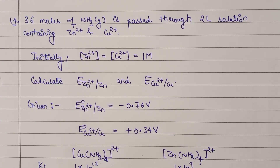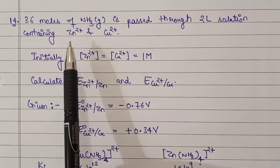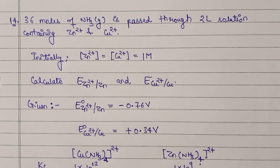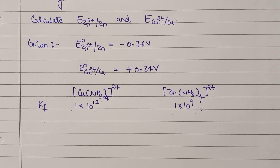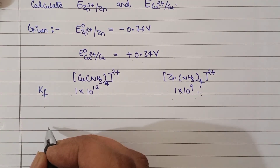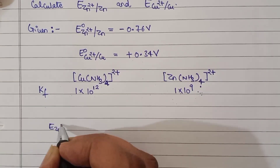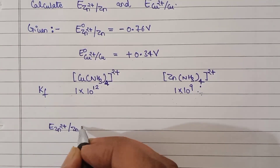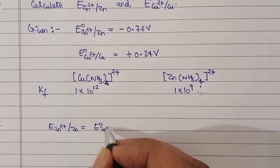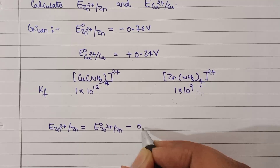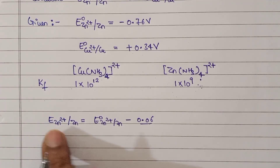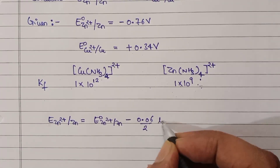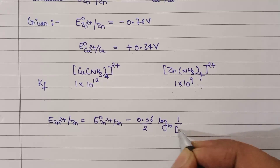When we add ammonia to this solution, it will form complexes with both Zn²⁺ and Cu²⁺, and the formation constants are given. Looking at the Nernst equation for Zinc: the reduction potential of Zinc equals the standard reduction potential of Zinc minus 0.0592/N — and for zinc reduction, N = 2 — times log base 10 of 1 divided by the concentration of Zn²⁺.